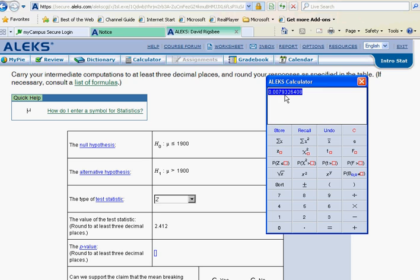And we will calculate our p-value to be 0.0079. Let's write that down. And notice they want this to three decimal places. So 0.008 is our p-value.